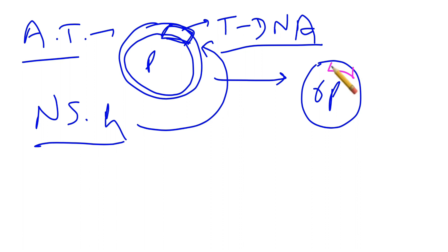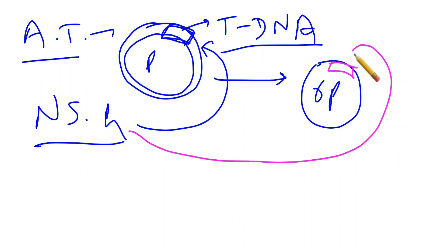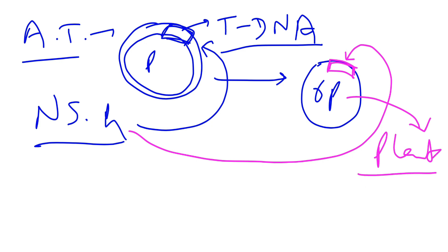We add the nematode specific gene and create the recombinant plasmid. Then we culture this bacteria with the plant tissues, and this recombinant plasmid gets entered into the plant cells. After entering into the plant cell, the plant develops the ability to resist itself from nematode infection. Let me now explain how the plant does that.